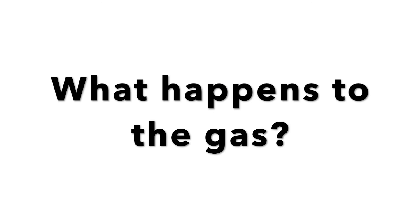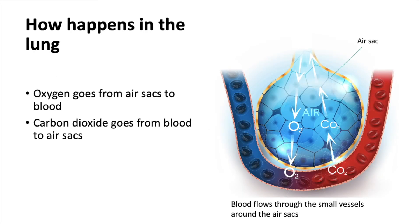What happens to the gases in the lungs? Oxygen from the air sacs travels into the blood, while carbon dioxide flows from the blood into the air sacs. Both of them travel according to their concentration gradient.